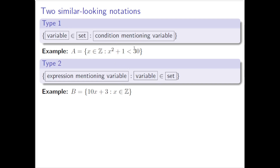Another distinguishing feature: if after the colon you see something that's true or false depending on the value of the variable, that's Type 1. Before the colon in Type 1, the condition like x² + 1 < 30 is either true or false. But in Type 2, the expression before the colon — like 10x + 3 — is not true or false; it's going to be a value, a number. If x is 4, then 10 times 4 plus 3 is 43 — just a number, not a condition. So these really look different. The thing before the colon in Type 2 is an expression — a value or number — not a condition.